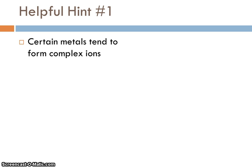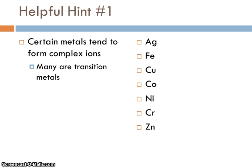So let's start with how do I recognize it's a complex ion? Well, certain metals tend to form complex ions. So here's a list. Silver, iron, copper, cobalt, nickel, chromium, zinc. These all form complex ions fairly commonly. You'll notice, if you have your periodic table handy, that many of them, they're all transition metals. Now, there's one other metal that tends to form complex ions a lot, and that's aluminum. It's not a transition metal.